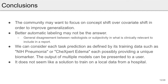To conclude, the community may want to focus on concept shift over covariate shift in order to improve generalization. It also seems that better automatic labeling may not be the answer. One idea is to consider each task prediction as defined by its training data, such as NIH pneumonia or Chexpert edema, each possibly providing a unique biomarker. The output of multiple models can be presented to the user at the same time. And finally, it does not seem like a solution to train on local data from a hospital.